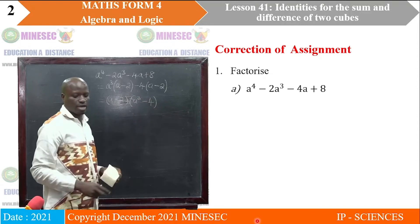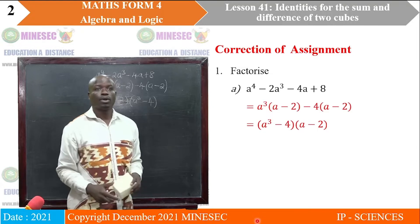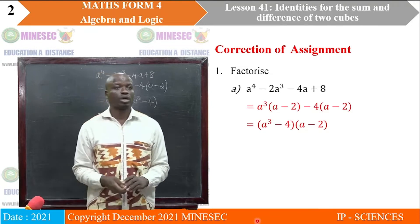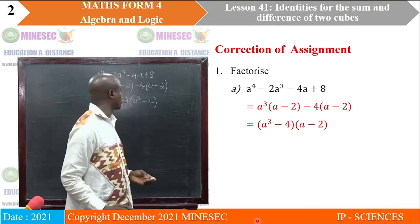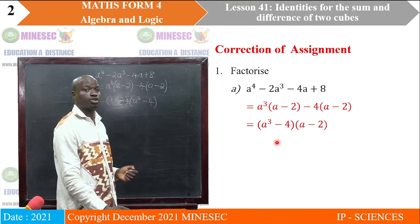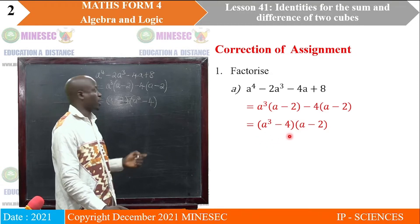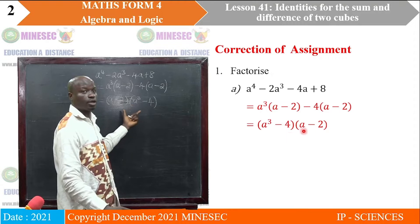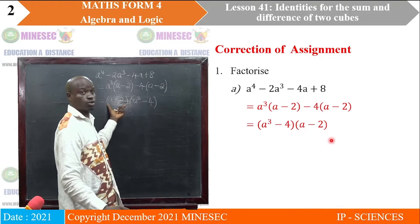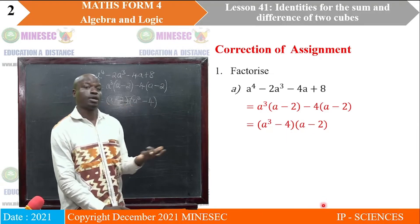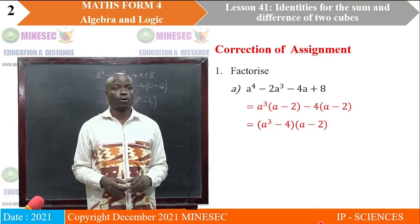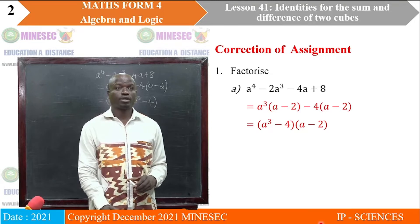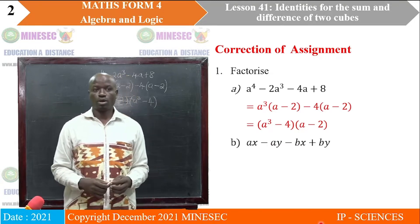So we have factorized that expression. Looking at what we have on the screen, we discover we have the same thing. Remember that multiplication is commutative, so A³ minus 4 times A minus 2 is the same as A minus 2 into A³ minus 4.